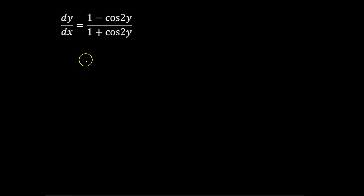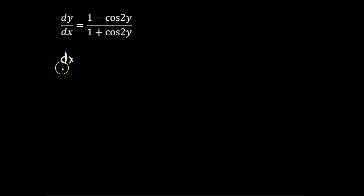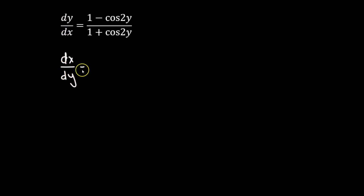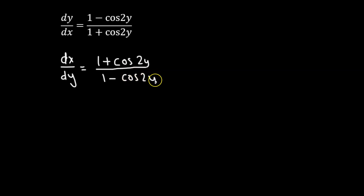Hello. So in this problem, we have a differential equation and we need to solve it by using the method of variable separation. Let's begin by first taking the reciprocal on both sides. So we have dx over dy equals to 1 plus cosine of 2y divided by 1 minus cosine of 2y.